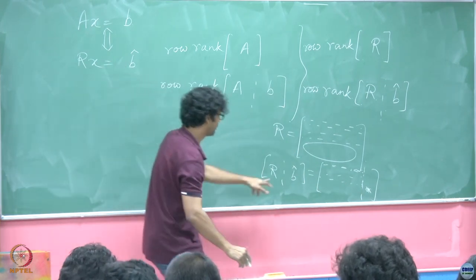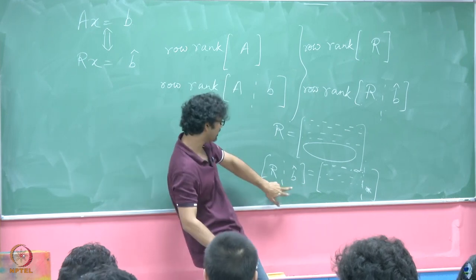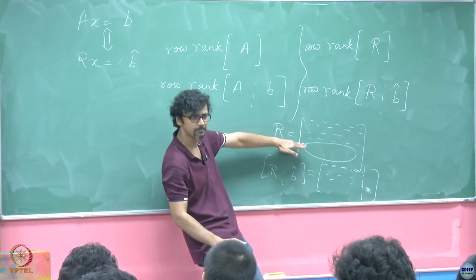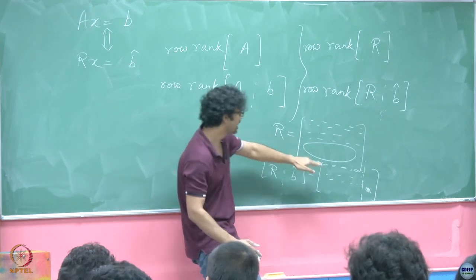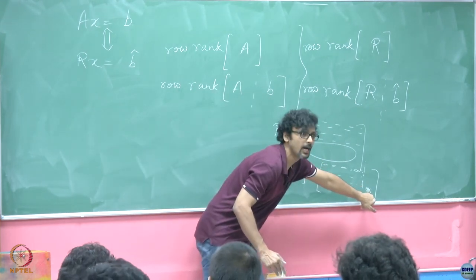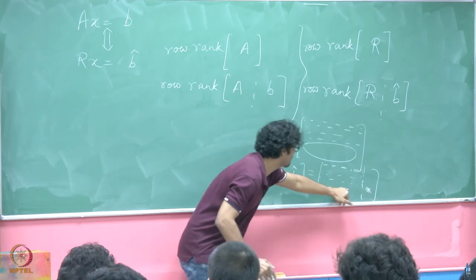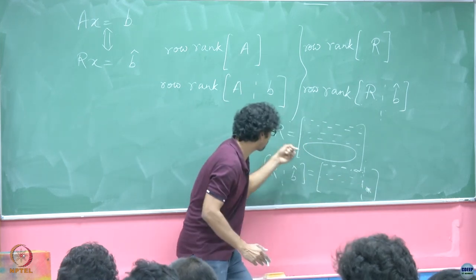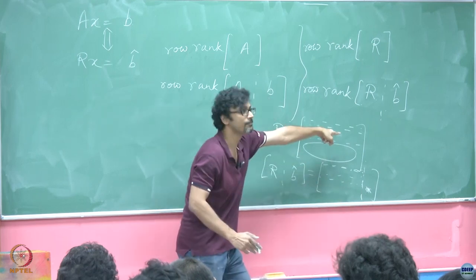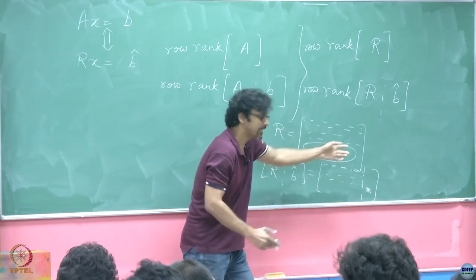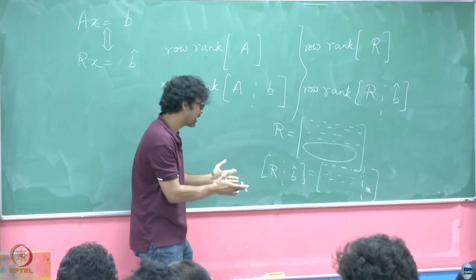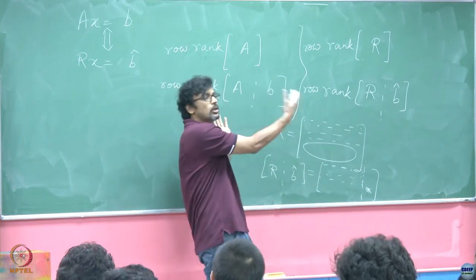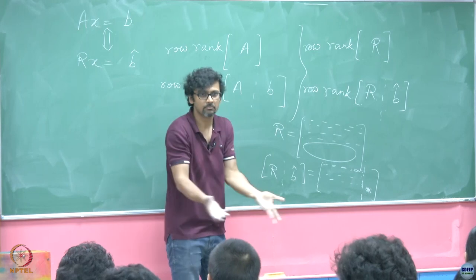That non-zero row must be perhaps some singleton here. The moment you have that, what sort of a condition are you trying to meet? You are trying to meet something times 0 is equal to something that is non-zero. An absurd proposition, is it not? When you have augmented it by B hat, the only way the rank of this fellow increases is if there is a non-zero B hat entry here corresponding to which all the other preceding entries are 0.